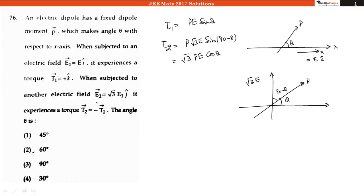In these cases, we are given the torque magnitude remains the same but the direction changes. So if I talk about only the magnitude, we can say that PE sin theta, which was the magnitude in the first case, is equal to the magnitude in the second case, which is root 3 PE cos theta.